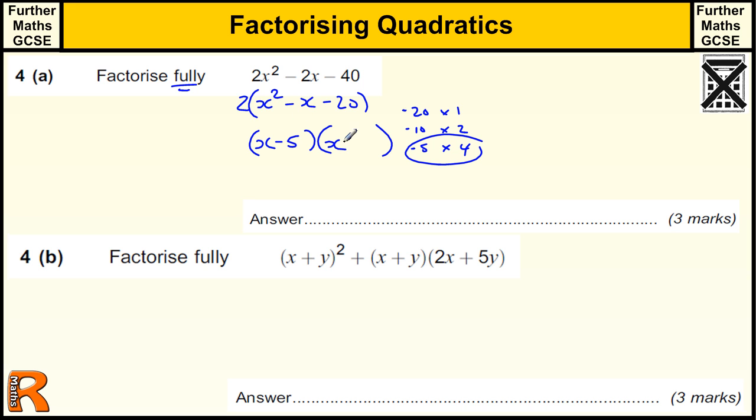So that's minus 5 and plus 4, and we've still got that 2 in the front. So we've got a 2, an x minus 5, an x plus 4.